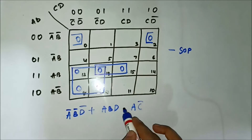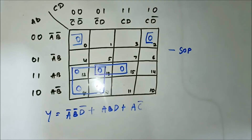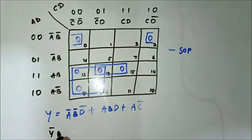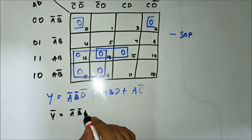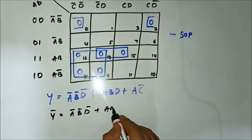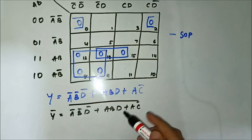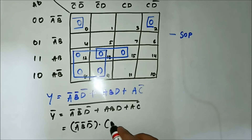This expression is all in SOP form, but we need it in POS form. So simply what we will do is take the complement of it. The result will have De Morgan's theorem applied, giving us the SOP terms: A-bar B-bar, A B D, and A C-bar.